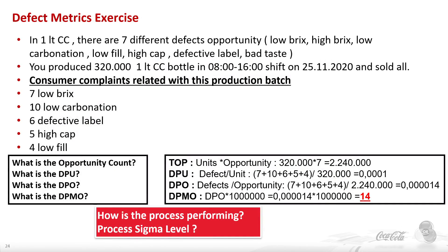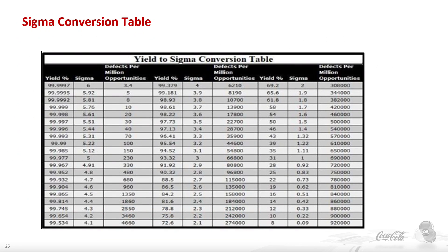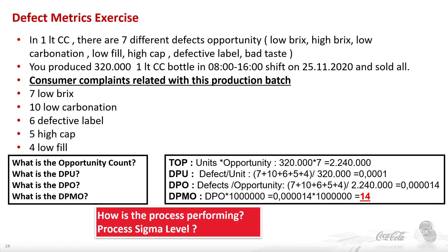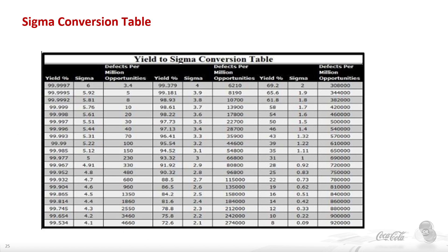Now, how is the process performing and what is the process Sigma level? For that, we will look at this graph. From this graph we will know what the process Sigma level is and how the process is performing. Our defects per million opportunities is 14. In this graph you can see the third table: defects per million opportunity on one axis and process Sigma level on the left side. Our DPMO of 14 is between 10 and 20, so our process Sigma is between 5.61 and 5.76 Sigma, and the yield of the process is between 99.997% and 99.998%.